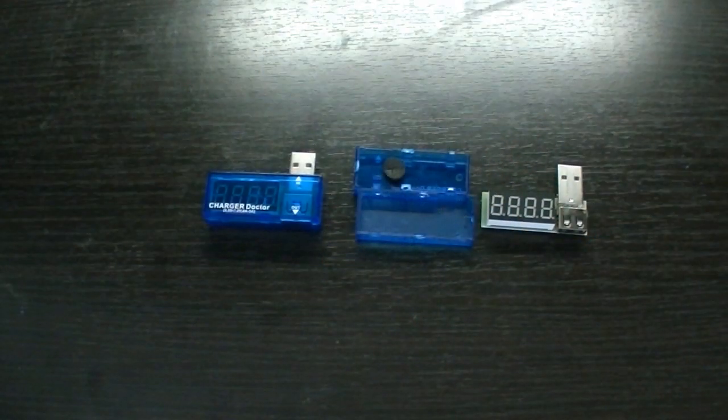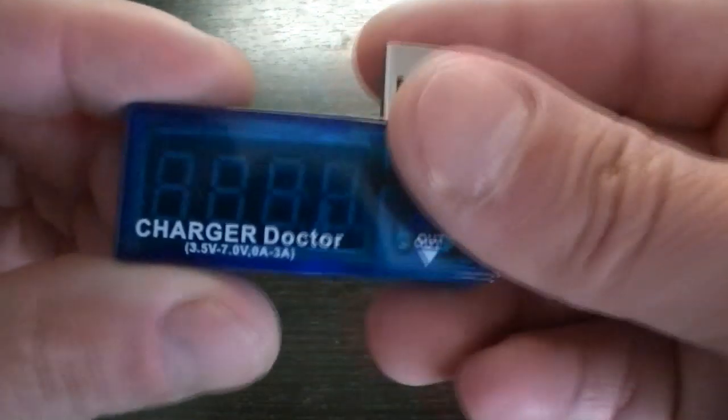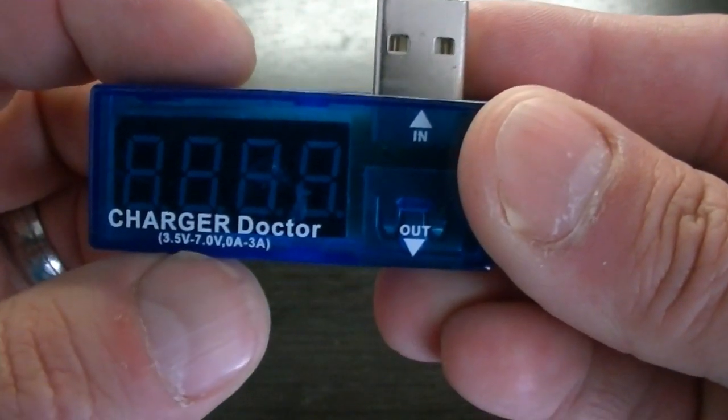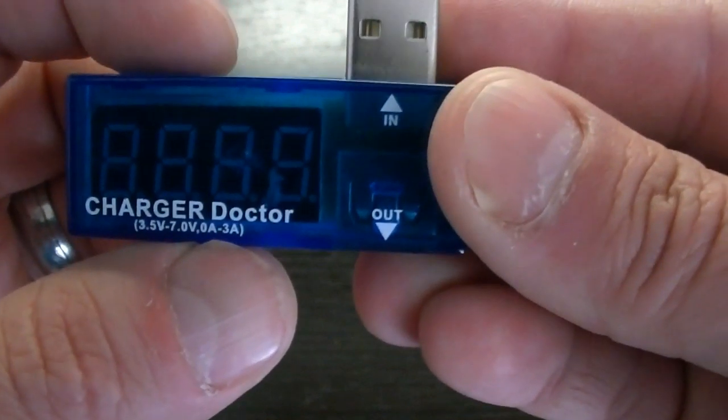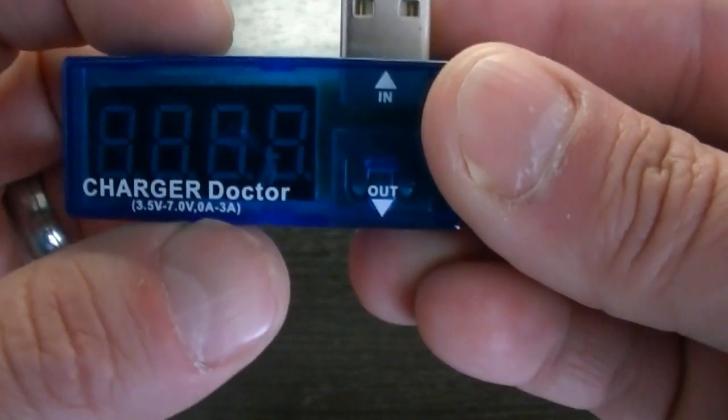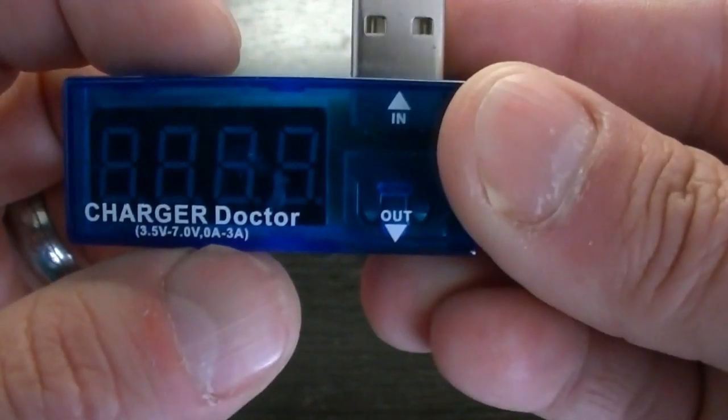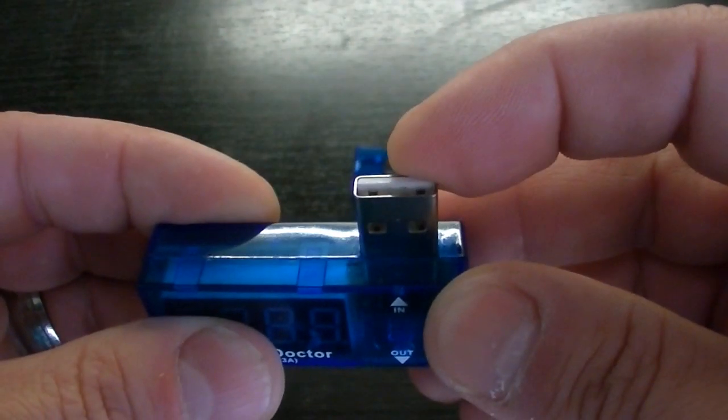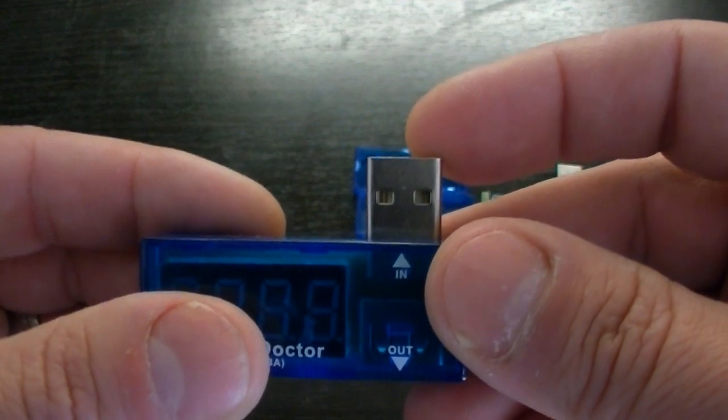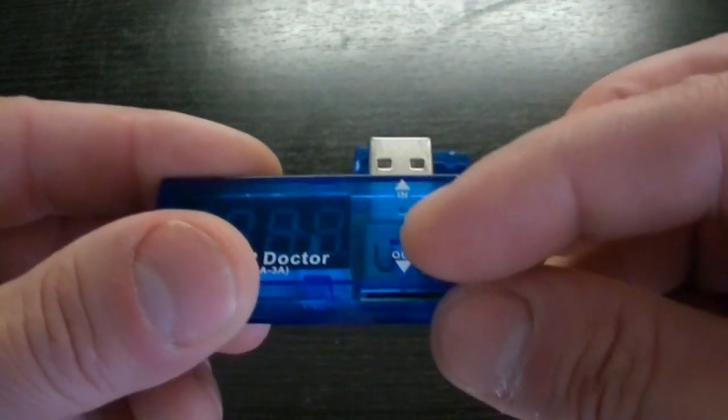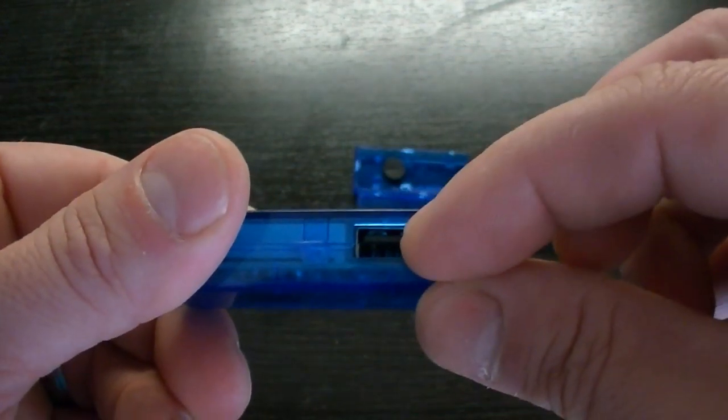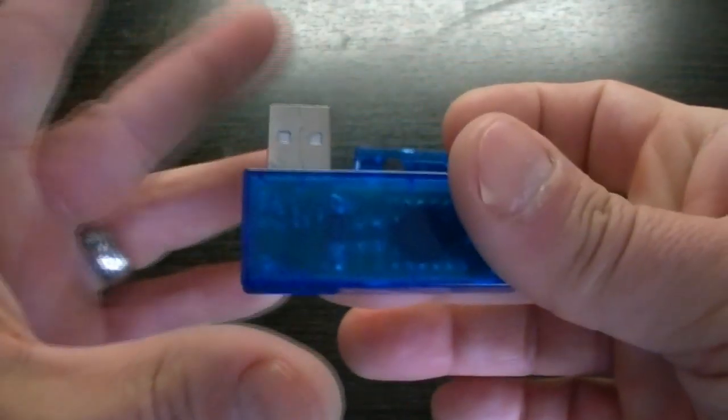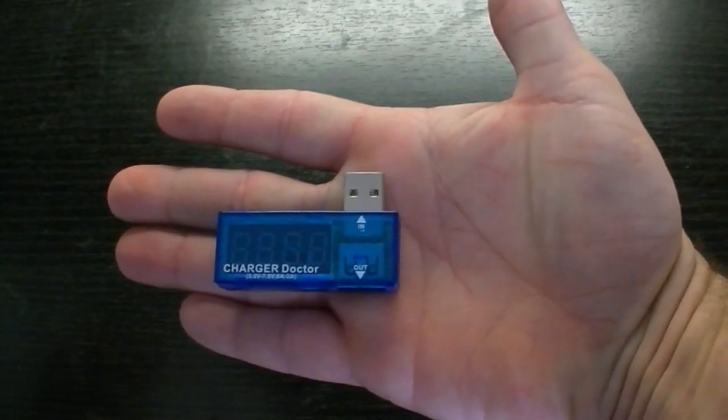So when you buy the unit you get the unit itself, charger doctor. Three and a half volts to seven volts input voltage and it can measure zero to three amps plus or minus one or two percent. So it's fairly accurate. You have your input power from USB that you plug into either wall outlet or your computer and your output where you plug your USB cable to go to whatever peripheral. And that's really it, it's a very very small unit.